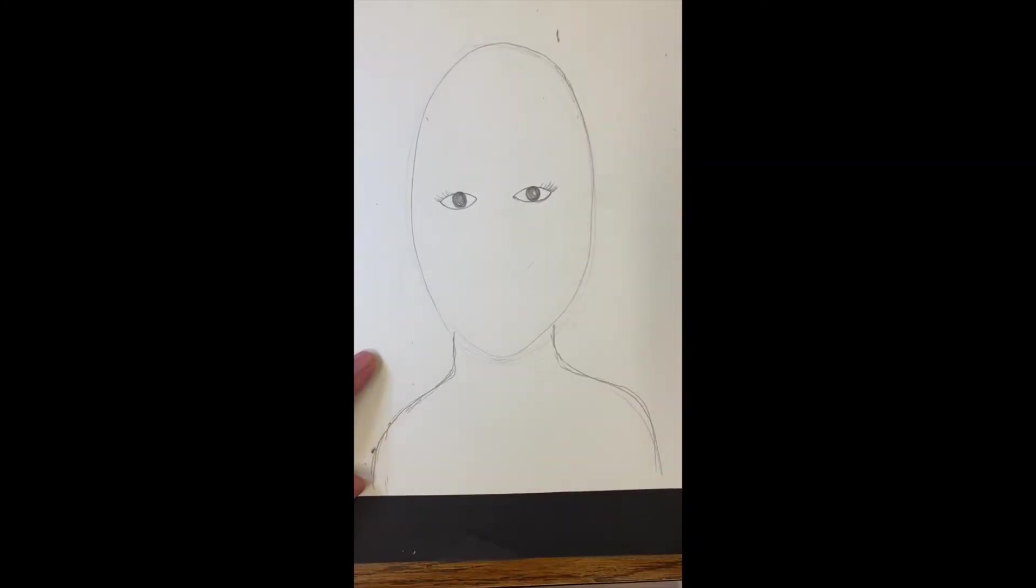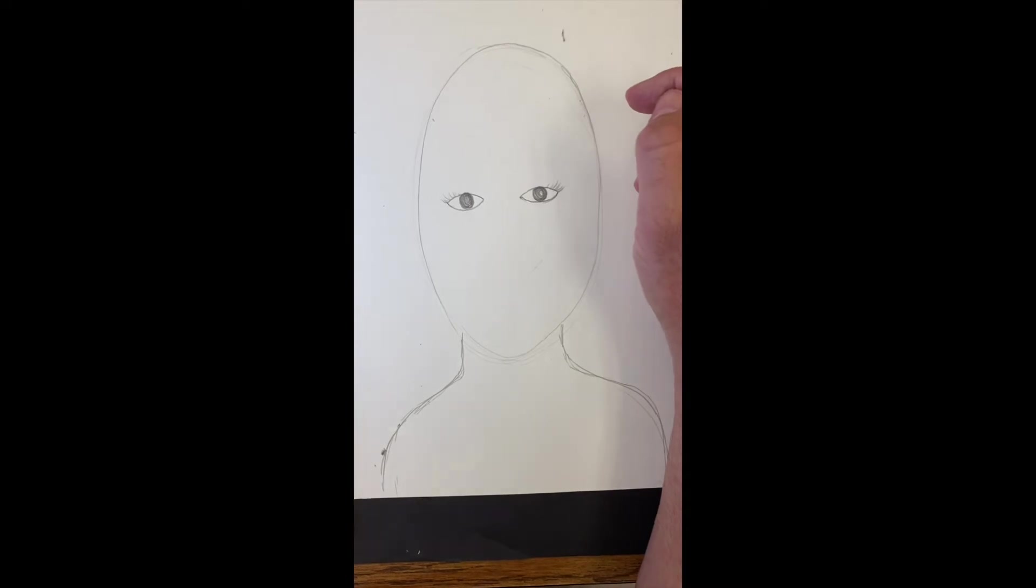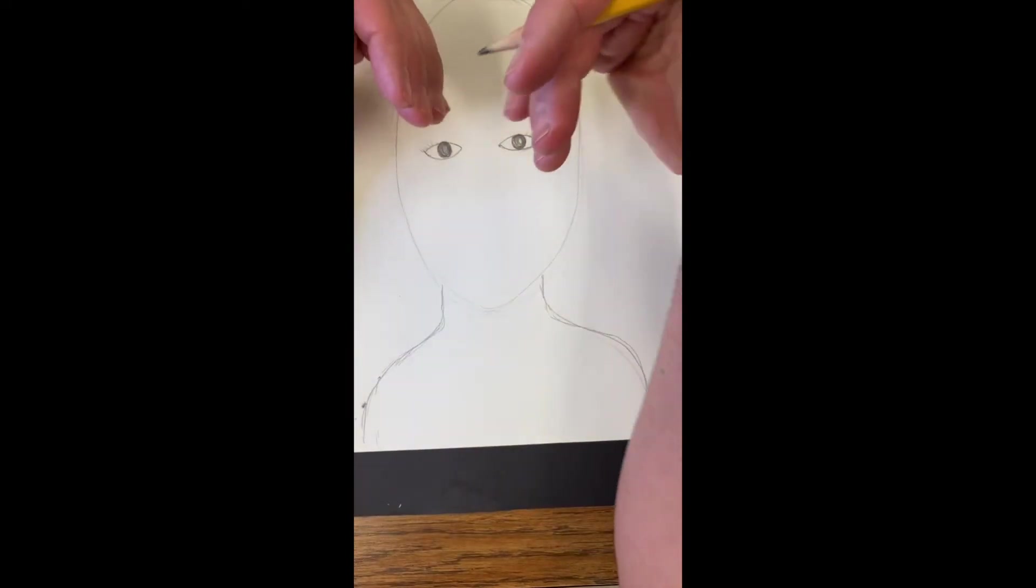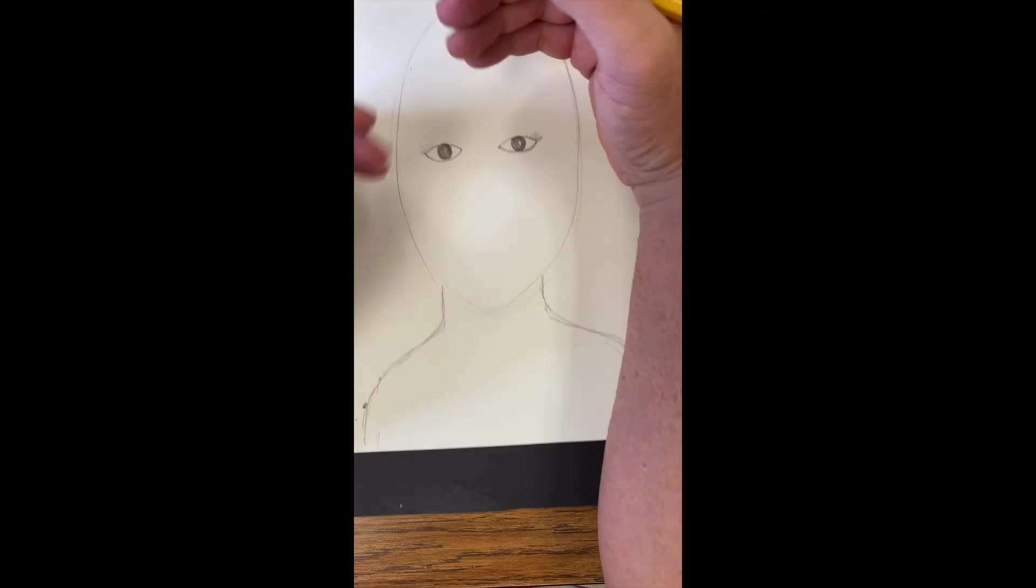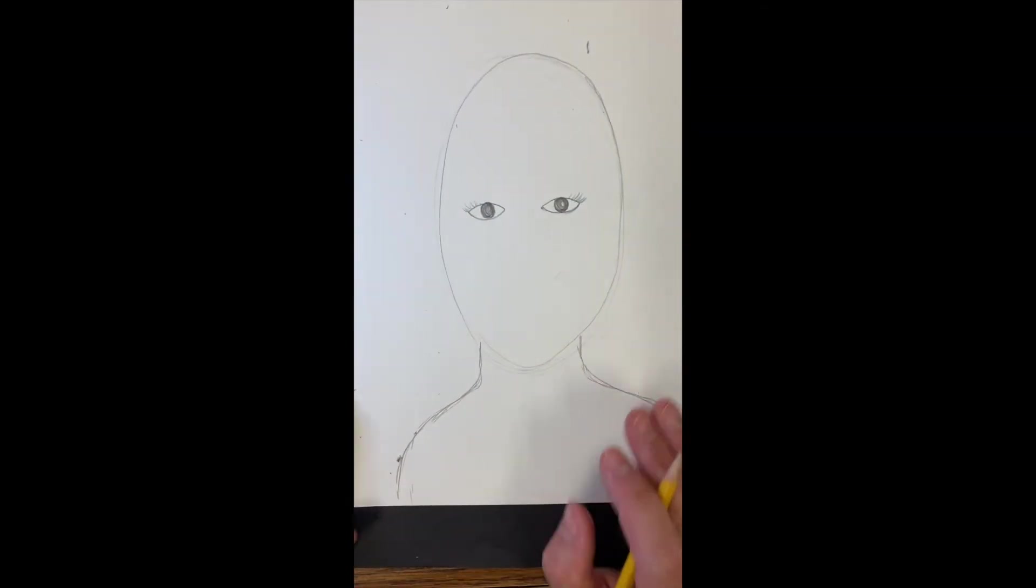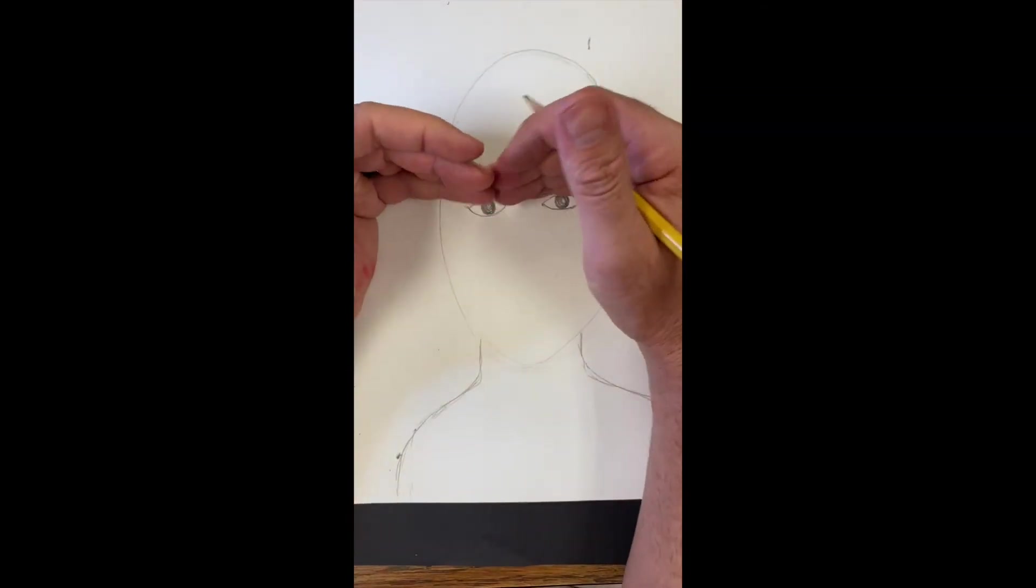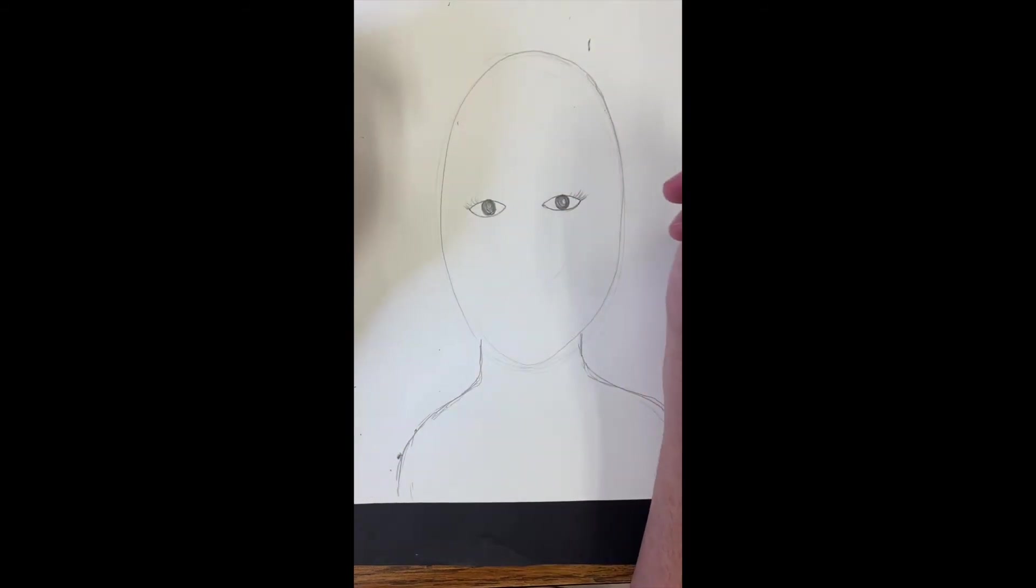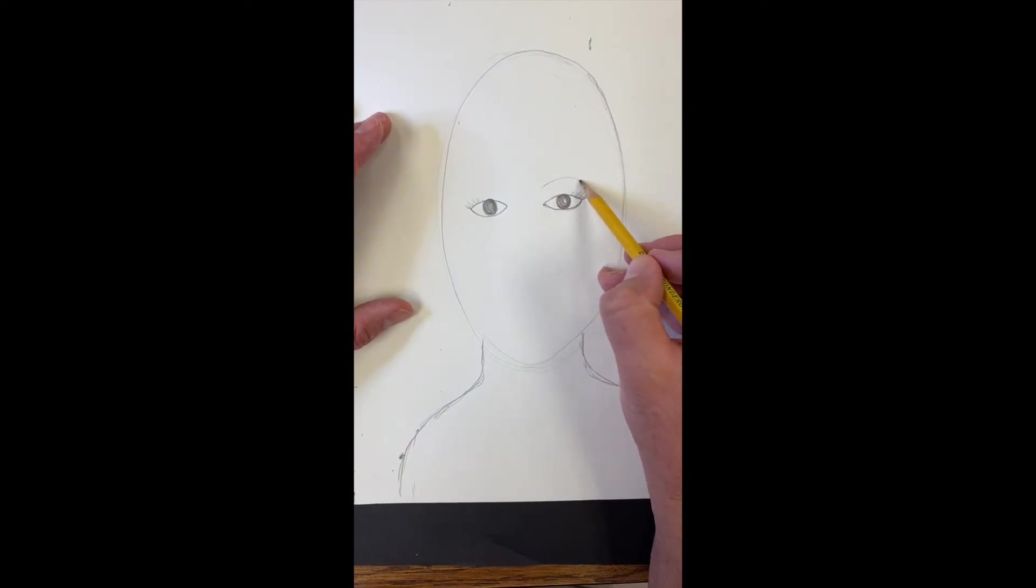And now, the way you do your eyebrows can really change the expression of a person. If your eyebrows go down, they look angry. Up, they might look frightened. Just straight across, kind of arching, maybe just sort of calm and content and happy. So, I'm going to go with just sort of calm.